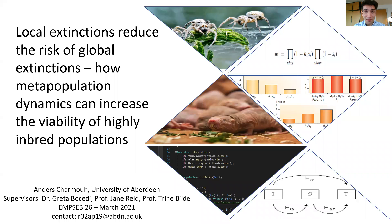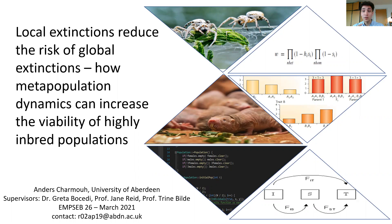Hello, everyone. Thank you very much for tuning in. My name is Anna Shamu. I'm a PhD student at University of Aberdeen, where I work with the theoretical evolutionary genetics of inbreeding mating systems — populations where inbreeding, which is the mating of close relatives, is very much the norm.